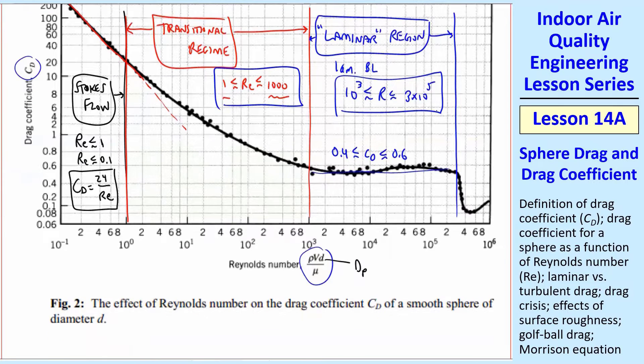And then we get into what some people call up until about 2 or 3 times 10 to the 5th, where you have this sudden change. So we call that the laminar region. And again, that's a misnomer because what happens in this case is the wake is actually turbulent, but the flow around the body has a laminar boundary. And this is between 10 to the 3, 1,000, and let's call it 3 times 10 to the 5th. In this region, the drag coefficient is between about 0.4 and about 0.6, but it's fairly constant. And then suddenly something happens called the drag crisis.